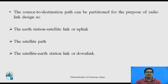The source-to-destination path can be partitioned for the purpose of radio link design as: the Earth station to satellite link or uplink; second, the satellite path; and third, the satellite to Earth station link or downlink.